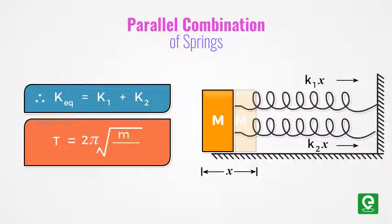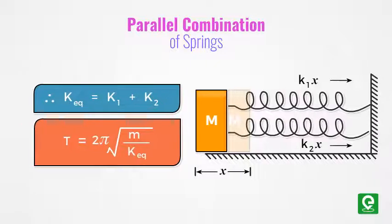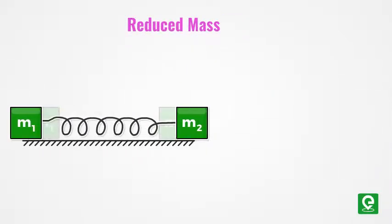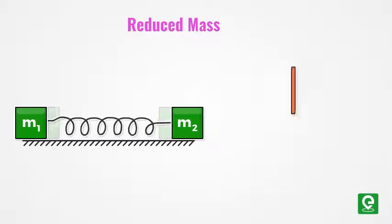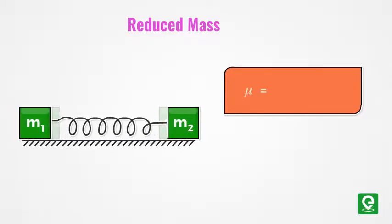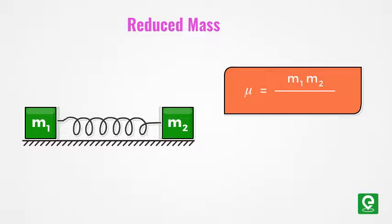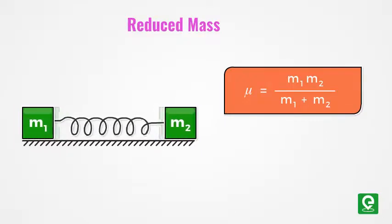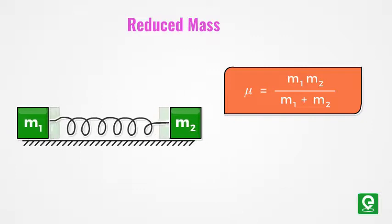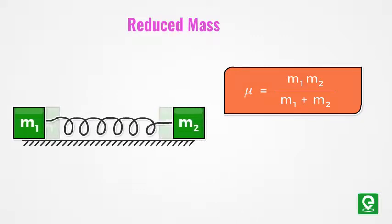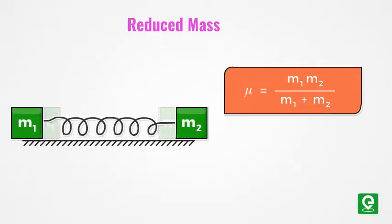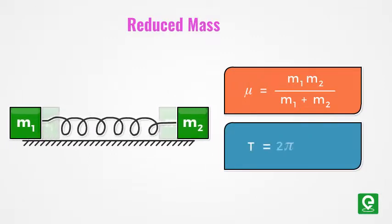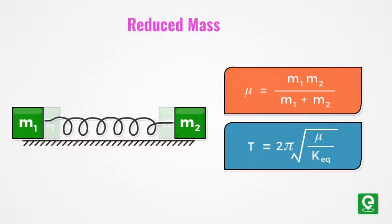If two masses are connected to a spring, then the equivalent mass is given by the relation μ = (m1 × m2)/(m1 + m2), which is also known as reduced mass. In this case, the time period of the two-mass system will be given by the relation T = 2π times square root of reduced mass upon spring constant.